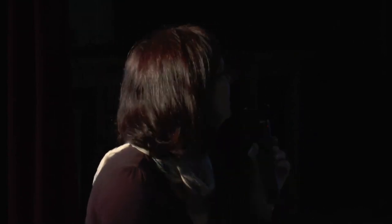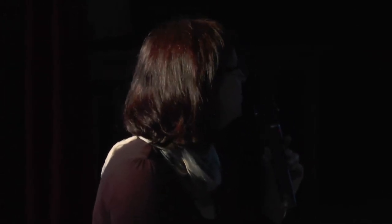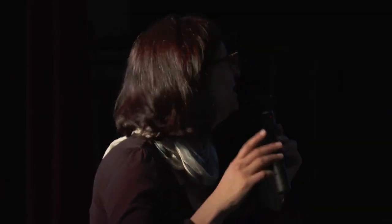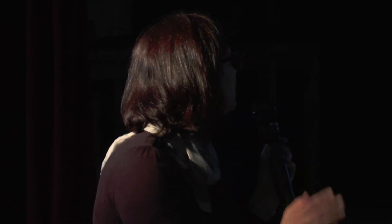Additionally to the website evaluation plots, there are also regular evaluations through what we call model dossiers, which are reports produced every six months. There is one dossier per model and one for the ensemble — seven plus one every six months — plus one special dossier for the Mediterranean area. Each six-monthly period is divided into two three-month periods because of the importance of seasonal variation. Air quality varies greatly with season, which is why we look at three-month periods.